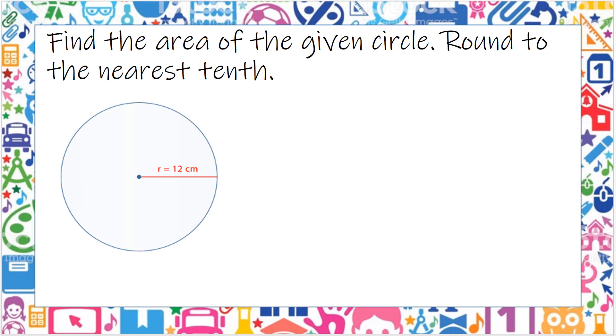Find the area of the given circle, round to the nearest tenth. The area of the circle is pi r squared.